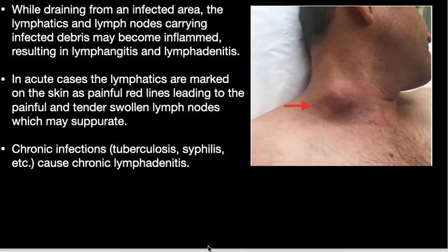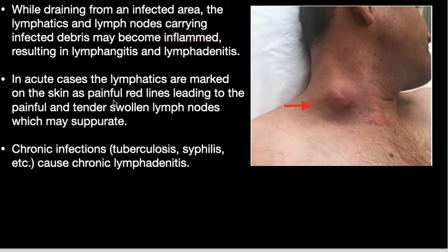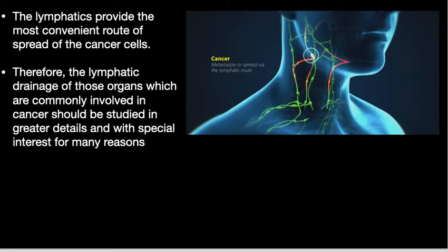While draining from an infected area, the lymphatics and lymph nodes carrying infected debris may become inflamed, resulting in lymphangitis and lymphadenitis. Lymphangitis is the inflammation of the lymphatics; in acute cases the lymphatics are marked on the skin as painful red lines leading to painful and tender swollen lymph nodes, which may suppurate or cause pus formation.